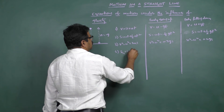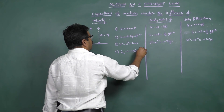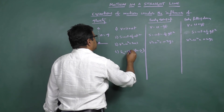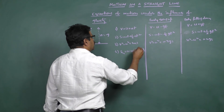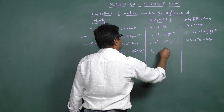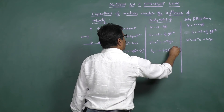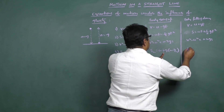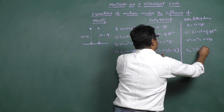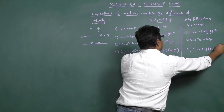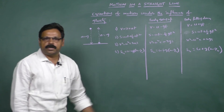The fourth equation sₙ = u + a(n minus ½). The original equation is sₙ = u + a(n minus ½). When moving upwards, it becomes sₙ = u minus g(n minus ½), substituting minus g in place of a. When moving downwards, it becomes sₙ = u plus g(n minus ½).